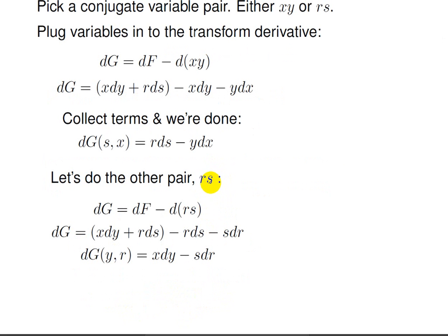Now we'll do the rs pair. We start by writing down our derivative: dg equals df minus the derivative of rs. Plugging in, dg equals xdy plus rds, then minus rds minus sdr. Collecting terms, the plus rds and the minus rds cancel, leaving dg as a function of y and r, equal to xdy minus sdr.